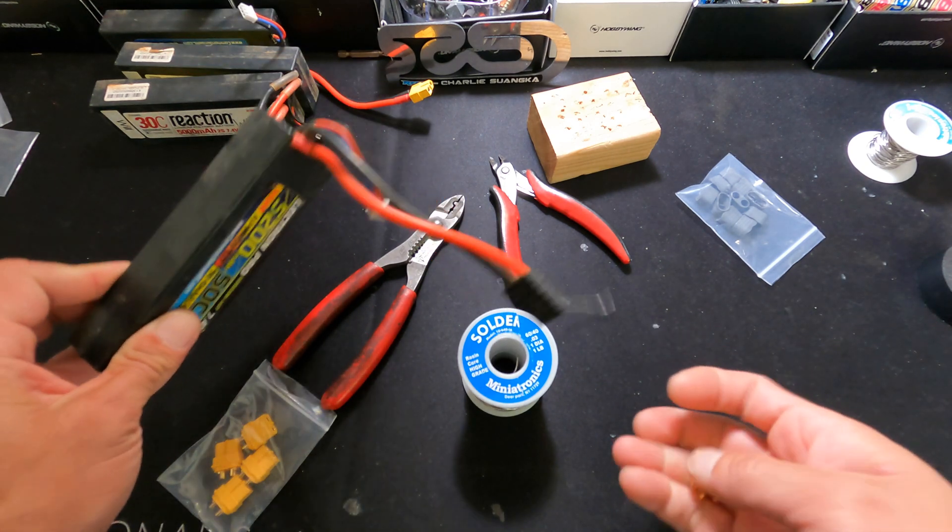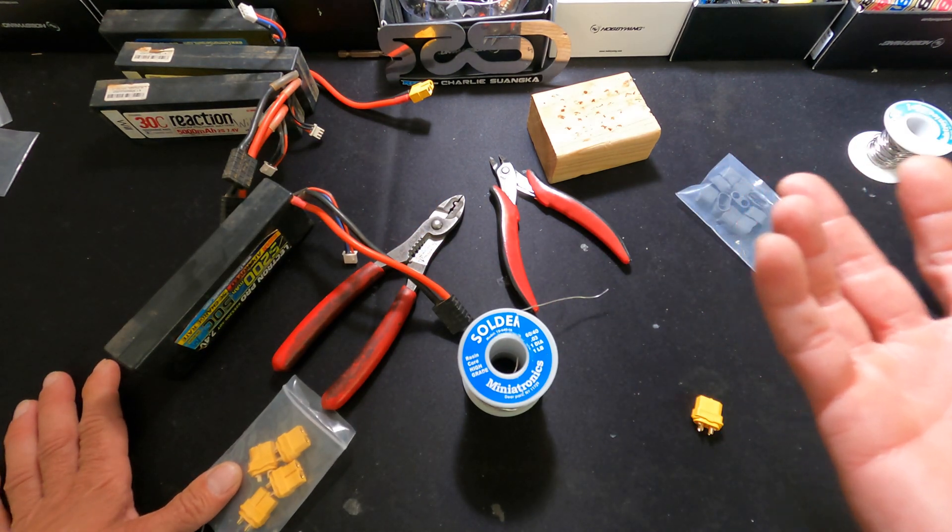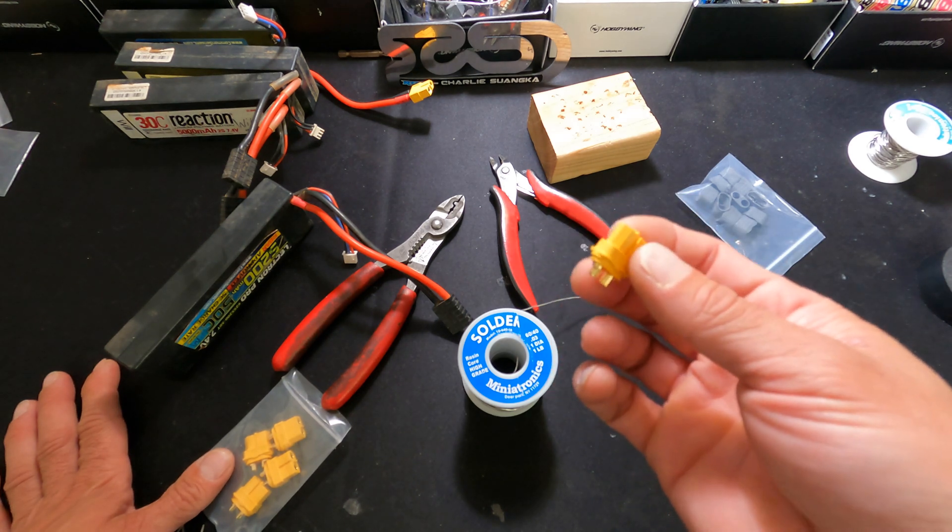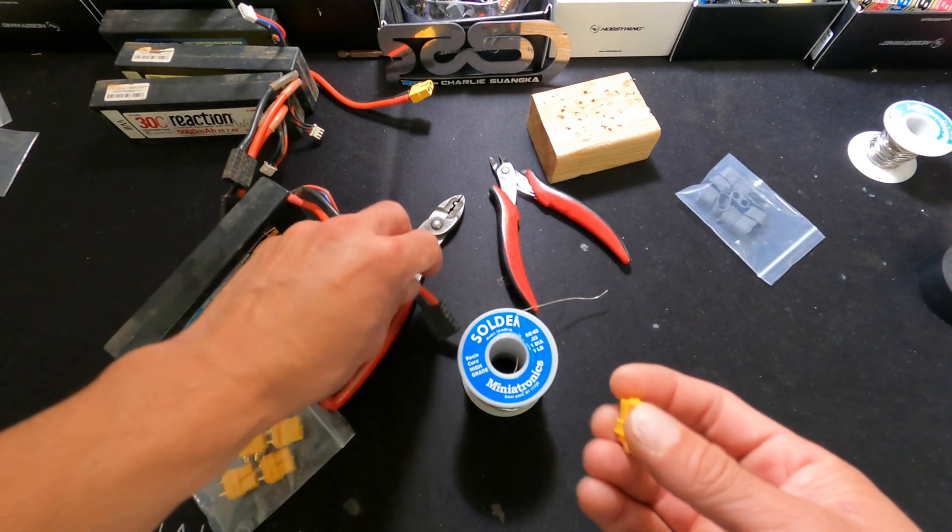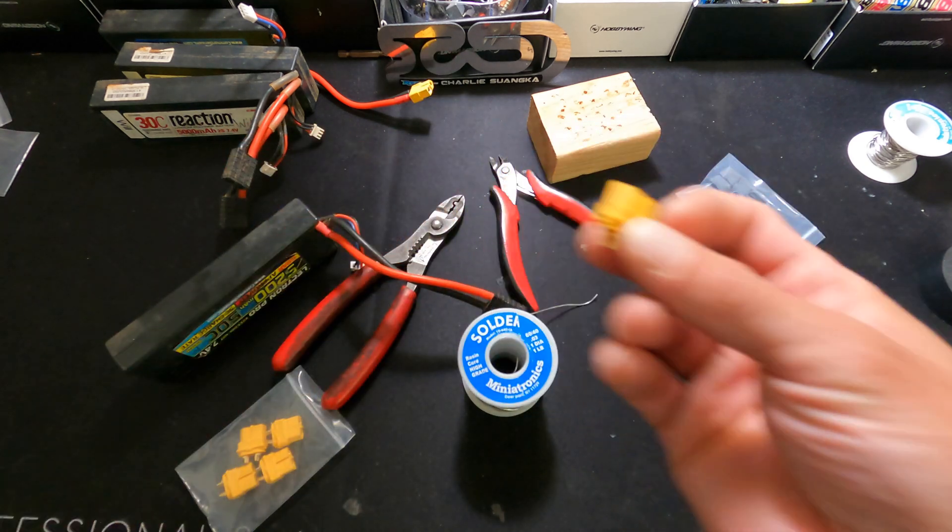But for most of the two cell stuff and rock crawling, XT60s are more than enough. So a buddy dropped off an RC car and it had been sitting for a very long time. Most of the problem wasn't anything with his electronics. His plugs are all gross and nasty, so we're gonna lop these off and put some fresh ones on.